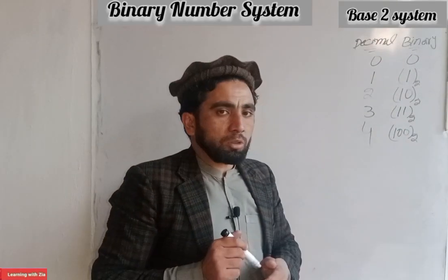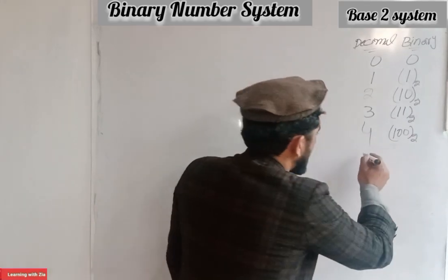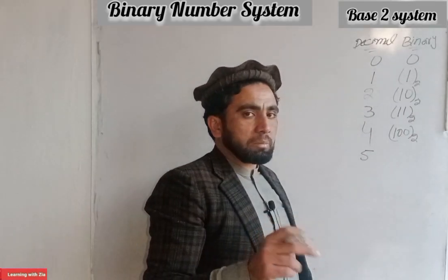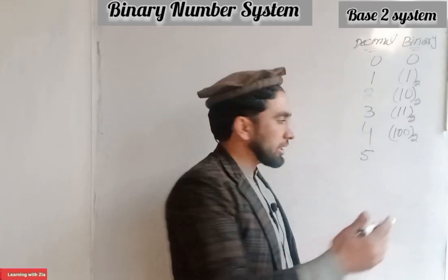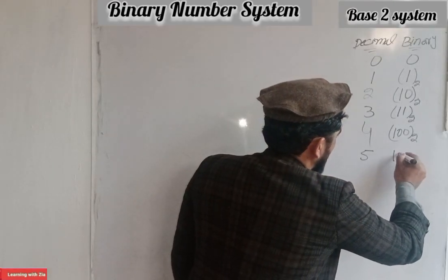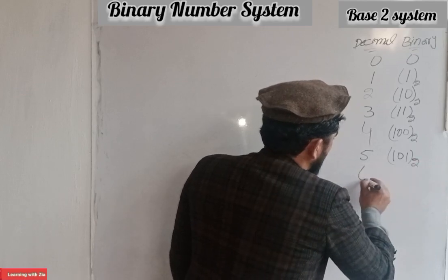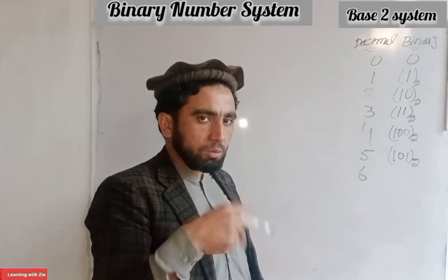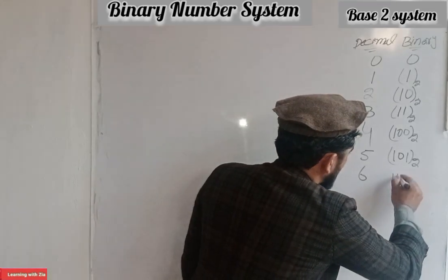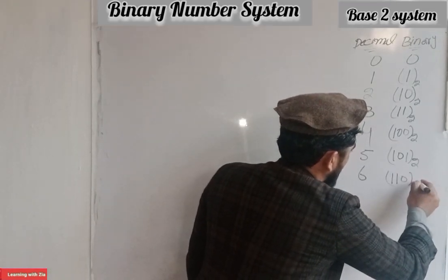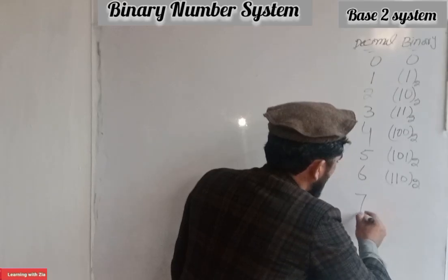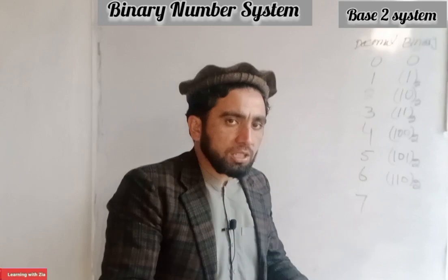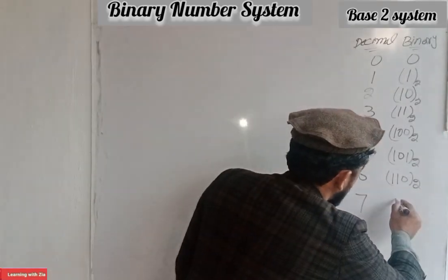In the binary system, the number 5 is represented as 100. The next number for the decimal system — number 5 — becomes 101 in binary. The next possible number, six, is represented as 110. Seven in the decimal system corresponds to the next binary possibility.